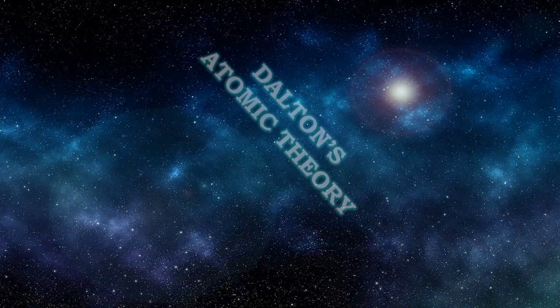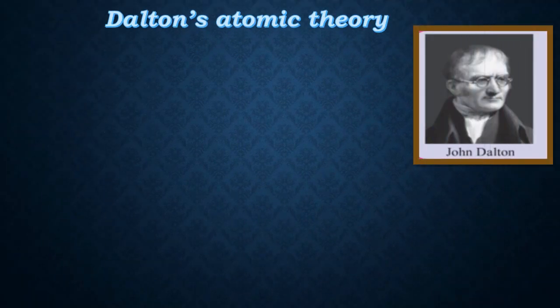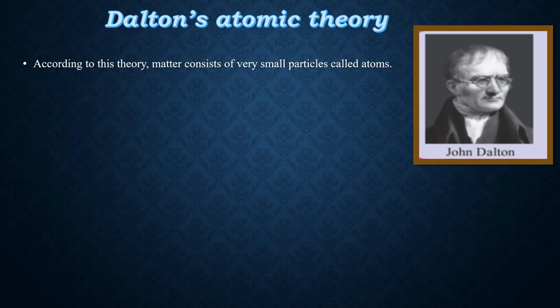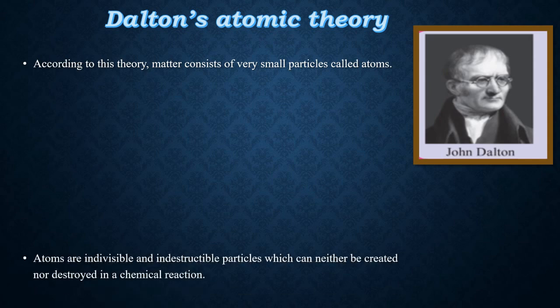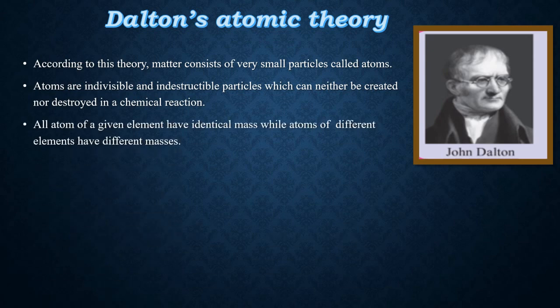Let's understand Dalton's atomic theory. British scientist J.D. Dalton put forth his atomic theory in 1803 AD to study the structure of the atom and the composition of matter. According to this theory: matter consists of very small particles called atoms; atoms are indivisible and indestructible and can neither be created nor destroyed in a chemical reaction; and all atoms of a given element have identical mass, while atoms of different elements have different masses.